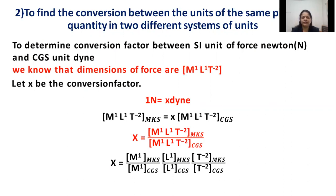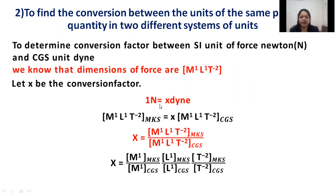The second use of dimensional analysis is to find the conversion factor between units of the same physical quantity in two different systems. For example, to determine the conversion factor between the SI unit of force (Newton) and the CGS unit of force (dyne), we write: one Newton equals x dyne, and we need to find the value of x.